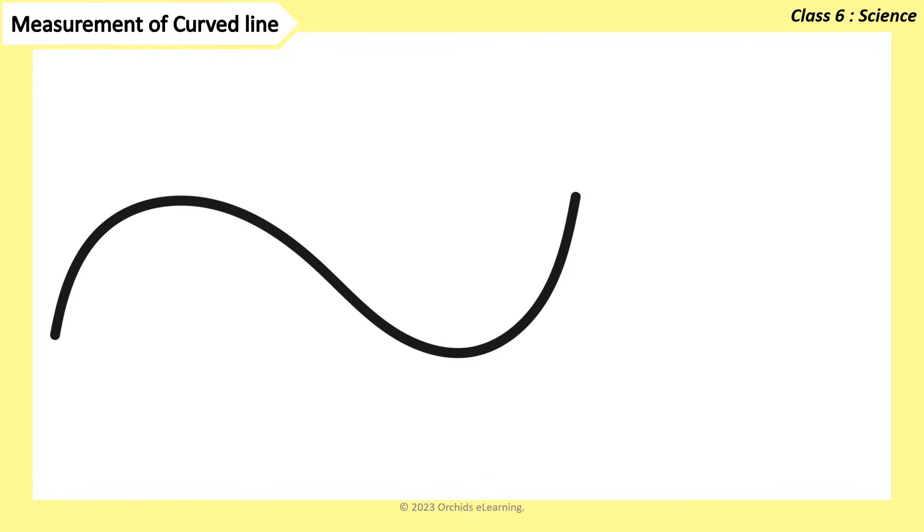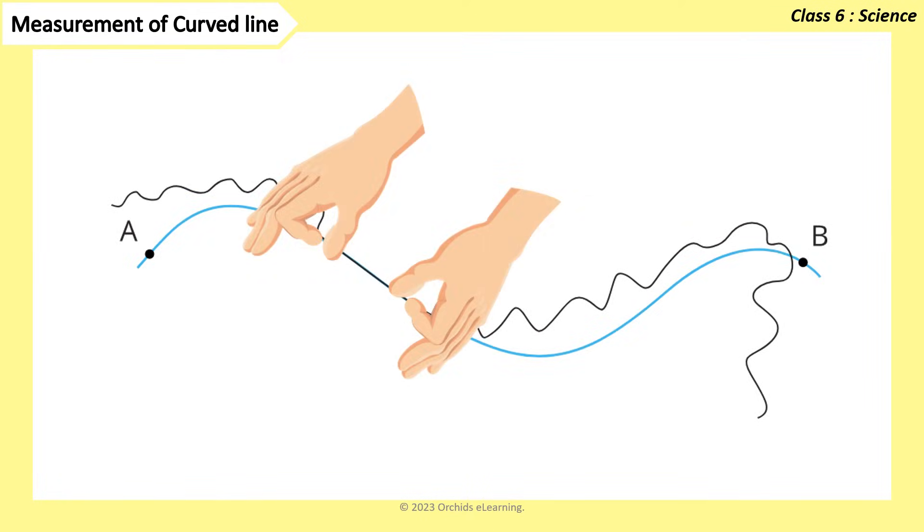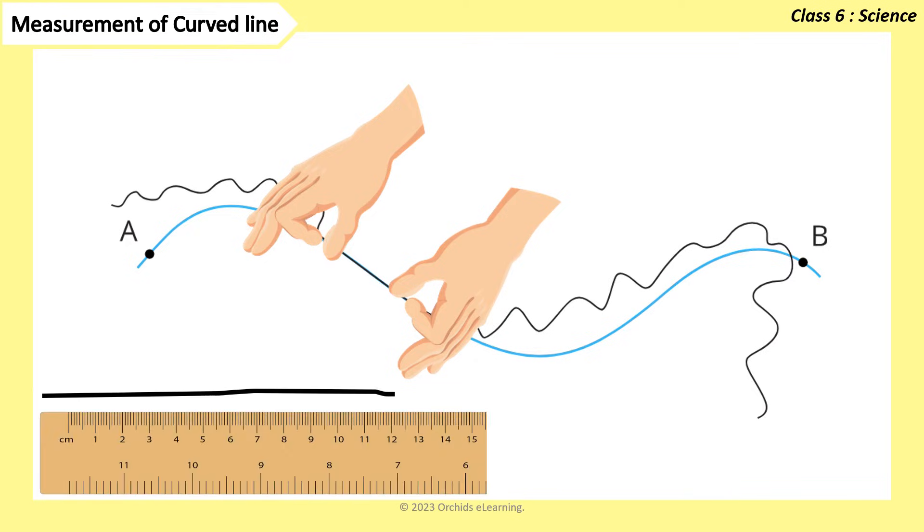The length of a curved line can be measured using a string. The string is placed along the curved line, and its ends are marked on the string. The length of the string between the marked points is measured with a ruler.